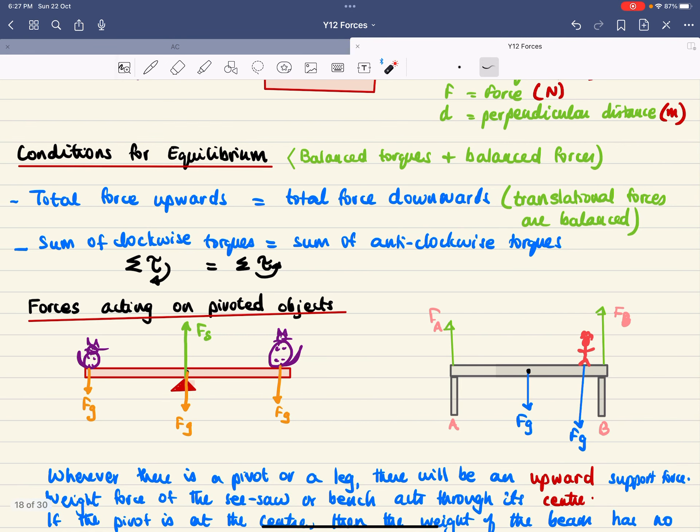Here's another example: a table or bench with two legs. The legs provide support forces upward—two lots of support force. The weight of the whole structure acts through its center of gravity at the middle. If there's a person standing there, you also have the person's weight acting downward.